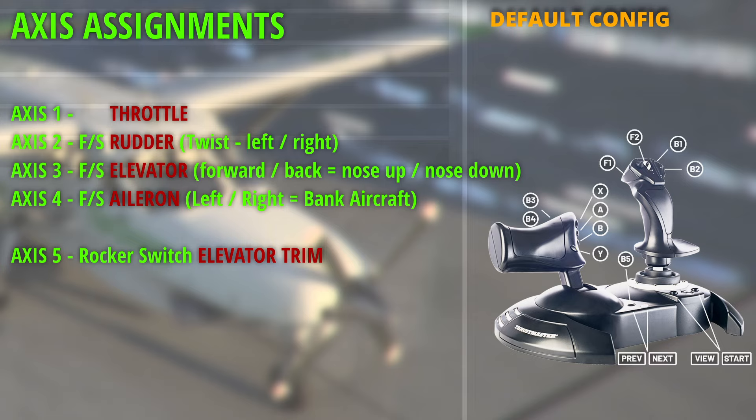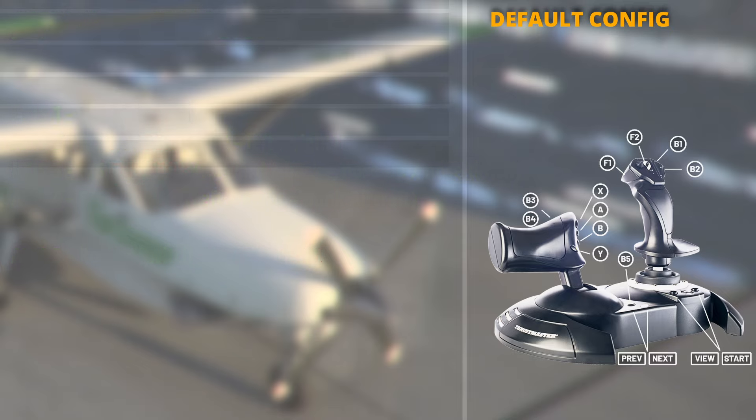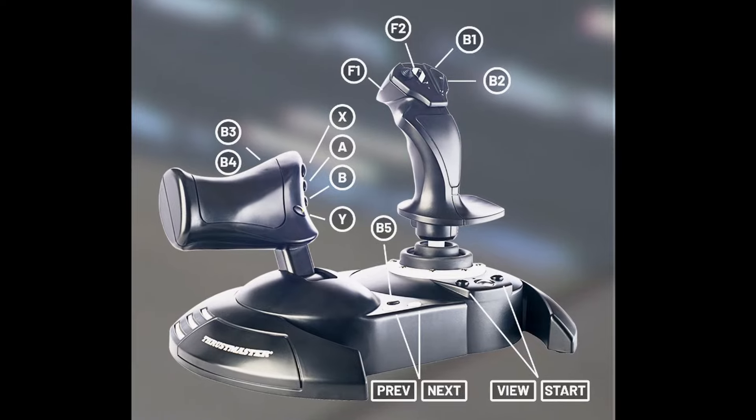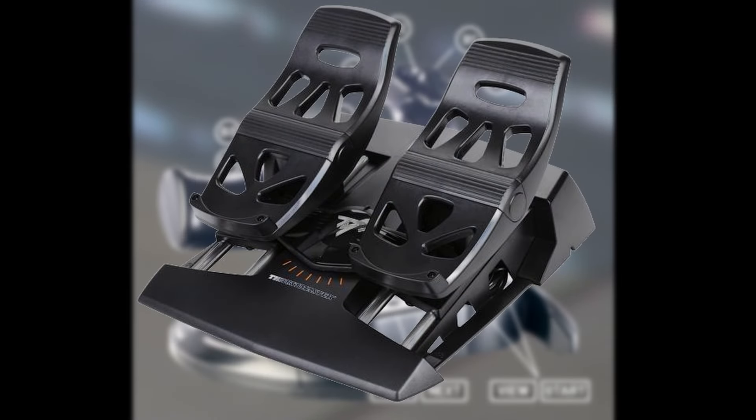The reason I've shown you the axis assignments is that within the configurator you will see 16 different axes from axis 1 to axis 16, and it can be very confusing. So if we ever wanted to reconfigure any of the axes, we would only need to worry about axes 1 through 5. If you had rudder pedals attached you would have more axes, but it still wouldn't get up to 16.